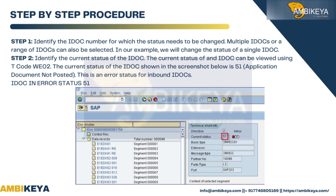Step 1: Identify the IDoc number for which the status needs to be changed. Multiple IDocs or a range of IDocs can also be selected; in our example we will change the status of a single IDoc. Step 2: Identify the current status of the IDoc, which can be viewed using T-code WE02.